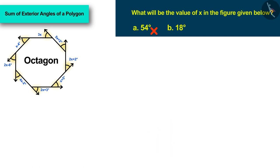In the previous video, we read that the sum of the exterior angles of a polygon is always 360 degrees.